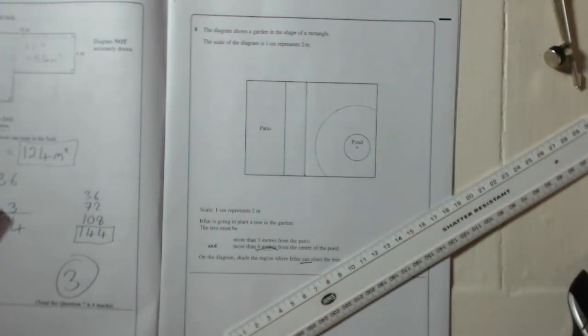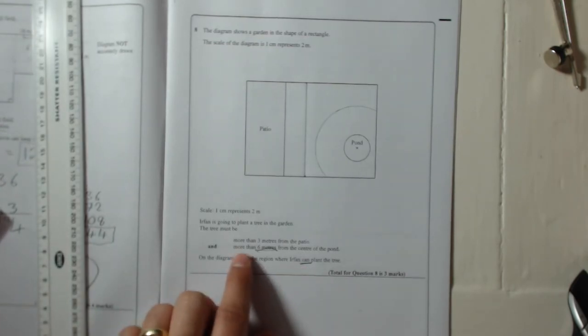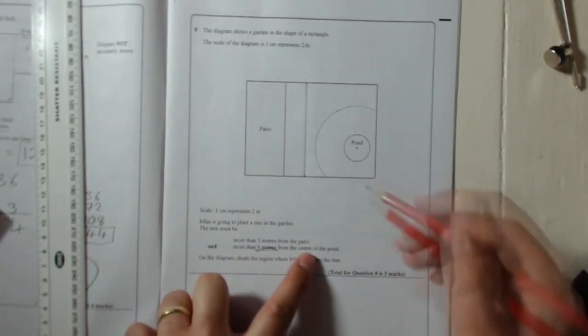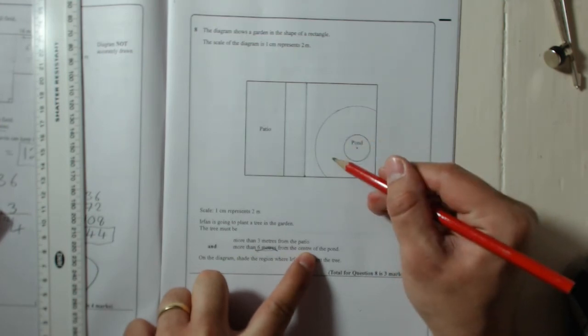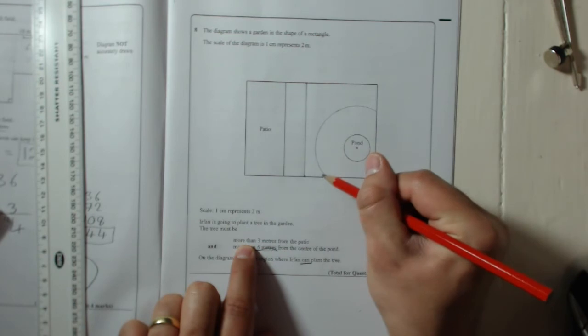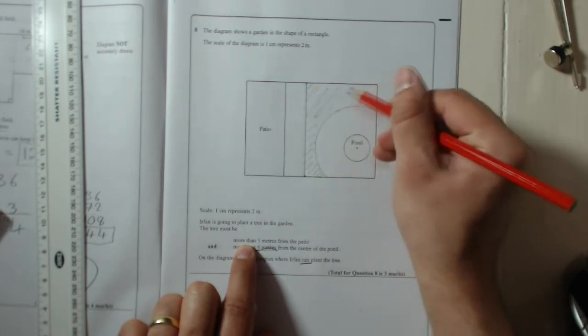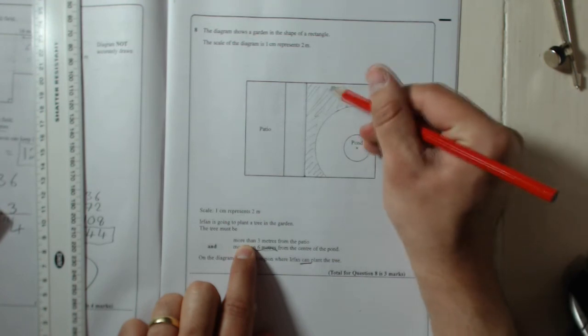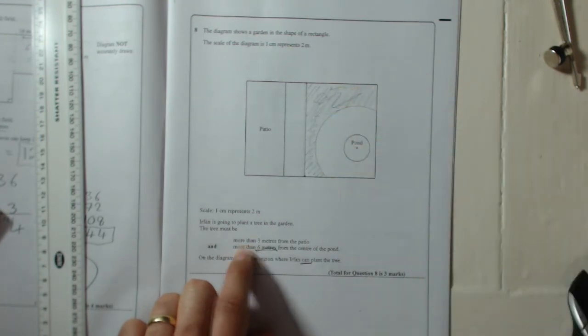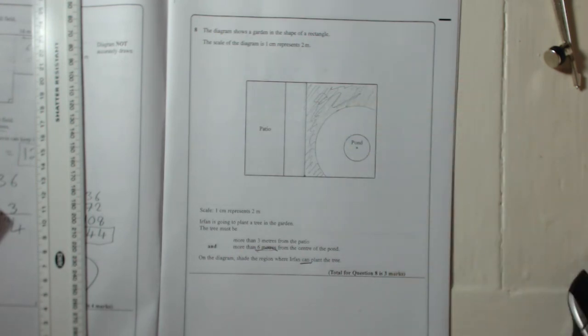remember, it says, on the diagram, shade the region where Urfan can plant the tree. It's got to be more than six metres from the centre, so it can't be in there. And it's got to be more than three from the patio, so it can't be in there. So the area we want to shade is this bit. And don't take ages to shade it in with colours or anything like that. Just do it really simply. Done.